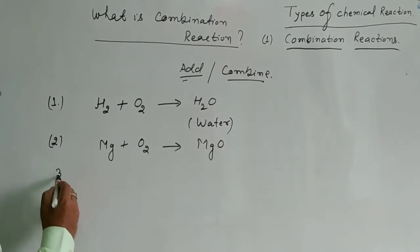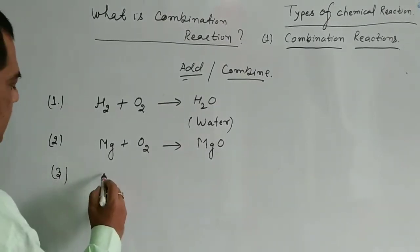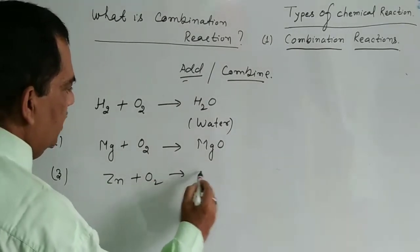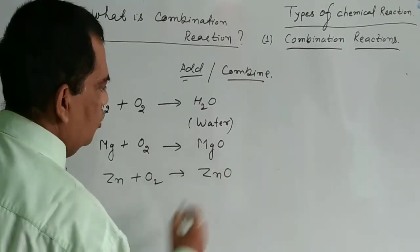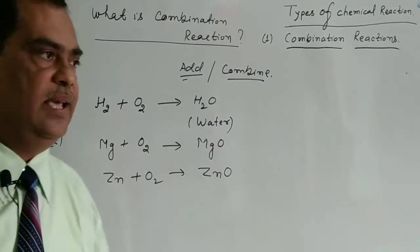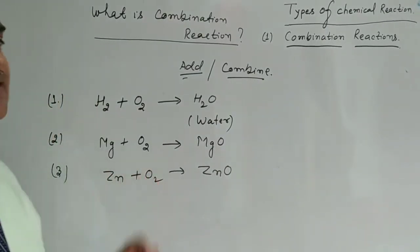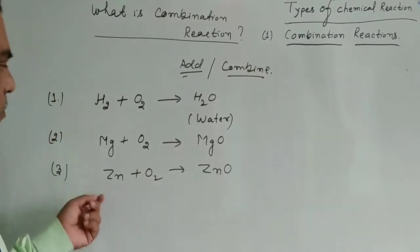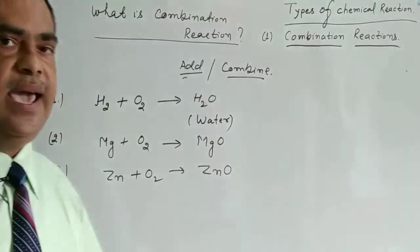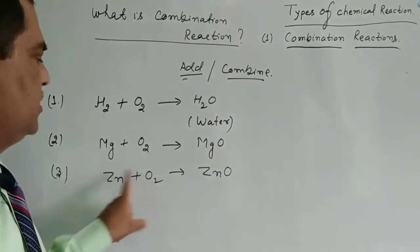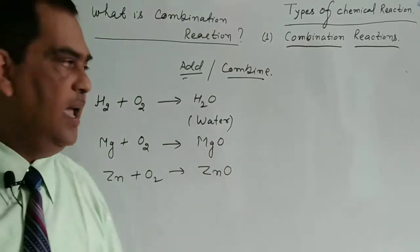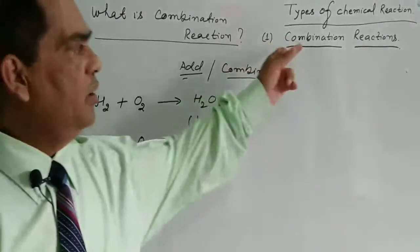Example number three: Zn plus O₂ gives ZnO. When zinc is burned in oxygen, zinc combines with oxygen and forms a new substance ZnO. So two substances combine and after the reaction give a single product — this is a combination reaction.